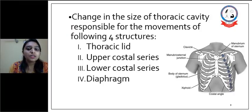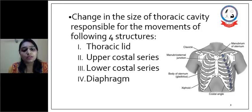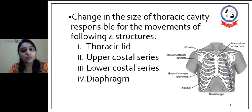The change in size of the thoracic cavity is responsible for movement of the following four structures. One is the thoracic lead, which is made up of the manubrium sterni and the first pair of ribs. Second is the upper costal series, which includes the 2nd to 6th ribs. Third is the lower costal series, which includes the 7th to 12th ribs. And the diaphragm is the primary muscle for inspiration.